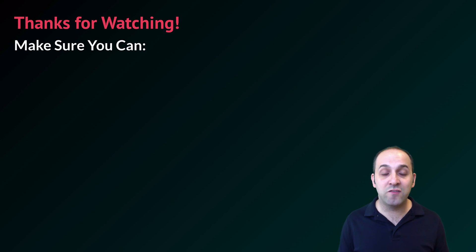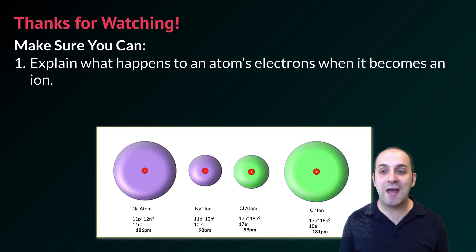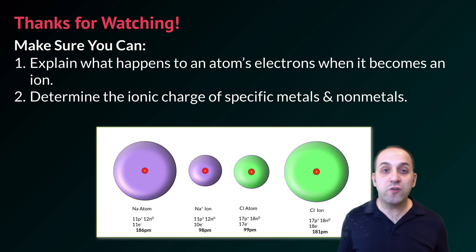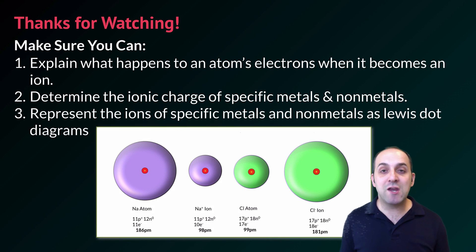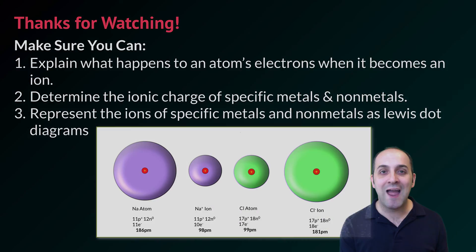Thanks so much for watching our discussion about ions. Take a moment here at the end and make sure you can do the following things. Make sure you can explain what happens to an atom's electrons when it becomes an ion. Does it gain electrons or does it lose electrons, depending upon its neutral valence configuration. Also make sure that you can determine the ionic charge of specific metals and non-metals. Finally, make sure that you can represent the ions of specific metals and non-metals as Lewis dot diagrams. If you can do each of those things, you're doing great. If not, that's okay too. Take a moment and write down any questions that you have. You can always leave them in the comments below the video or get in touch with me through the information in the info field. Thanks again for watching. I really appreciate it. Have a great day.